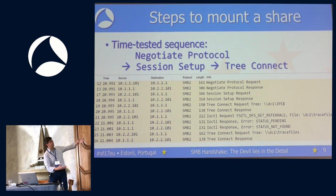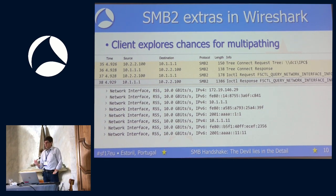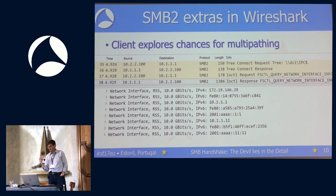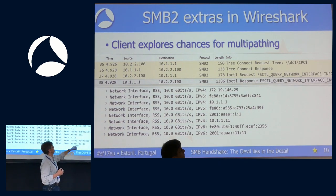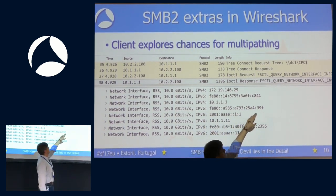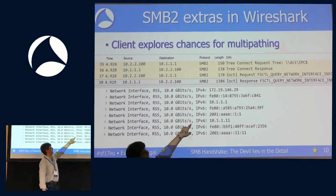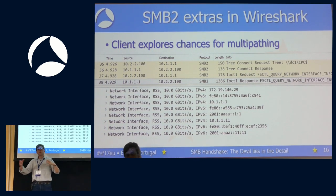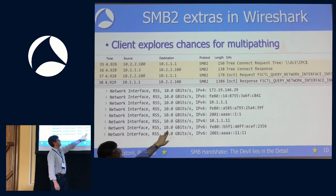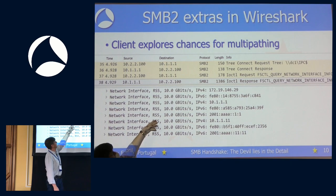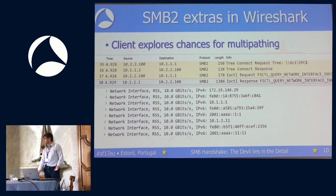This sequence has been used billions of times in client-server communications. SMB multipath changed that — now everything no longer happens in one TCP connection. Starting with Windows 8, we have multipathing. After the initial connection, the client sends a special query — IO Control: Query Network Interface Info — asking the server if it has more than one network interface. The server responds with a list of IPv4 and IPv6 addresses and available network interfaces, all reported as 10-gigabit interfaces. Eight different addresses, each with 10-gigabit bandwidth.